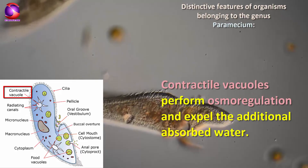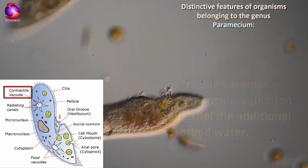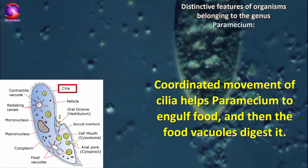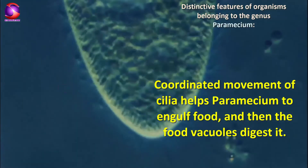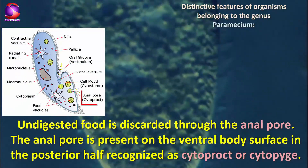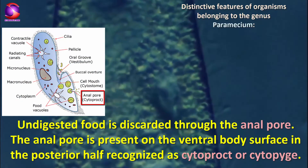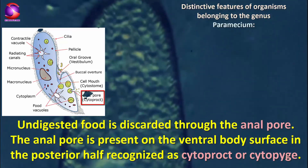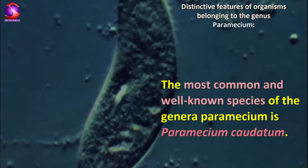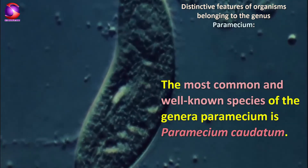Contractile vacuoles perform osmoregulation and expel the additional absorbed water. Coordinated movement of cilia helps Paramecium to engulf food, and then the food vacuoles digest it. Undigested food is discarded through the anal pore, which is present on the ventral surface in the posterior half of the cell, known as cytoproct or cytopage. The most common and well-known species of the genus Paramecium is Paramecium caudatum.